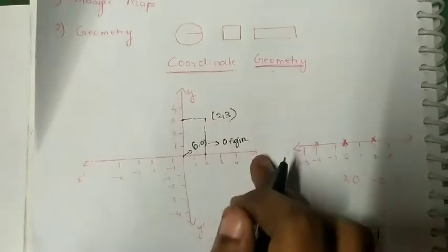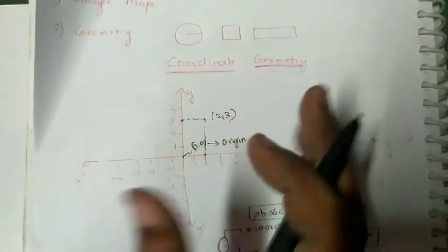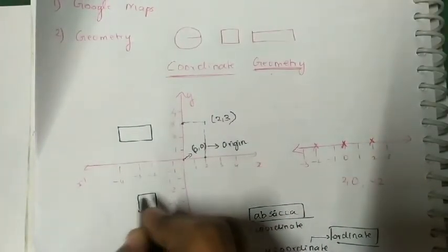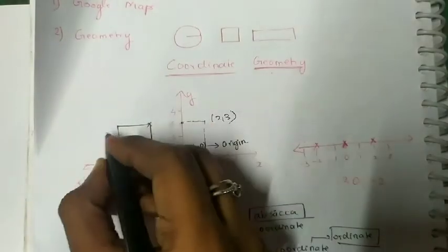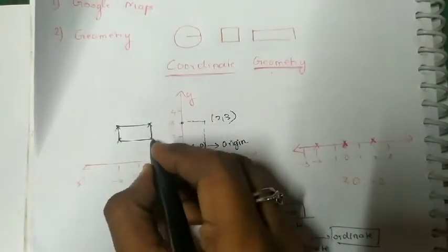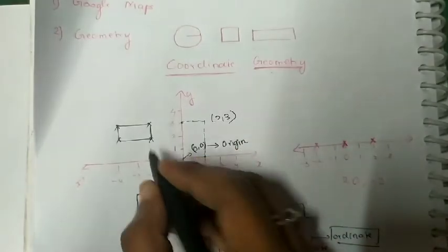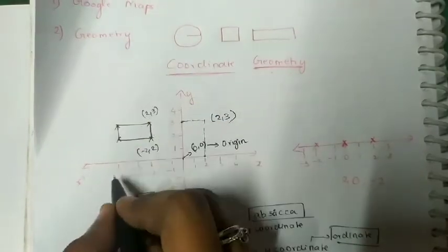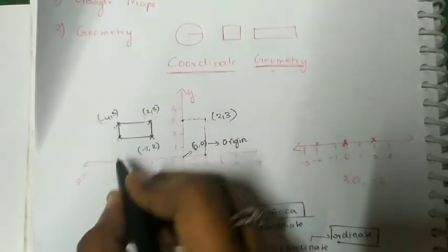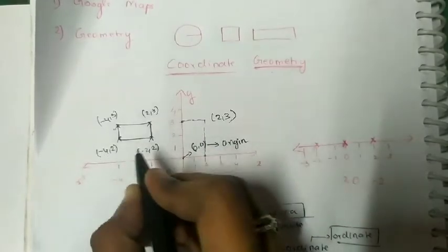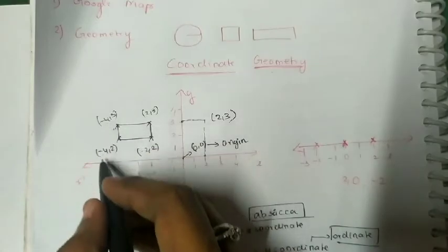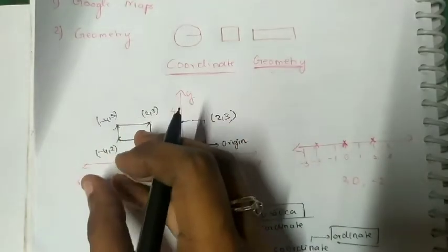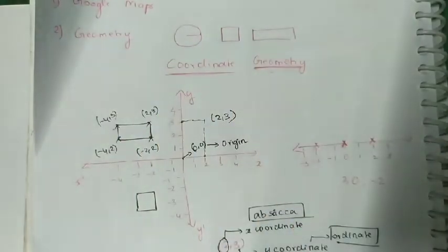In this graph, we can even draw shapes like rectangles, squares, and all — these are geometrical figures. For example, in a rectangle, the corner points might be (minus 2, 2), (minus 2, 3), (minus 4, 3), and (minus 4, 2). By using coordinates, we are drawing shapes — that is why it is termed as coordinate geometry.